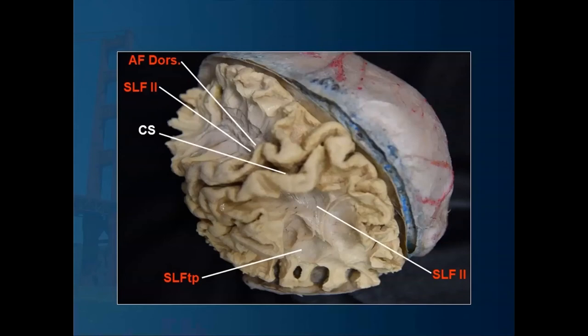As we go into a case and do the cortical map, within a short distance deep — once we start getting underneath the U fibers — we have to start thinking very carefully about where the subcortical fibers are, such as the arcuate fasciculus and the SLF as it wraps around the so-called Wernicke's region. Although we don't refer to those terms anymore — meaning Wernicke's or Broca's area — we still refer to the SLF, which wraps around. I'll show you ways in which, from a technical point of view, you can isolate and map these out.